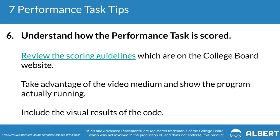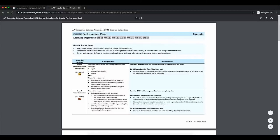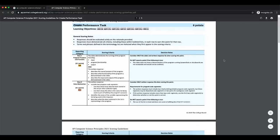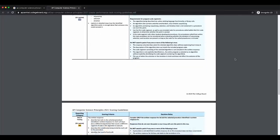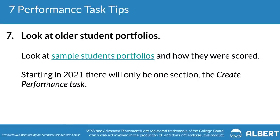Our sixth tip is to understand how your task is going to be scored. The best way to do this is to reference the previously released scoring guidelines by the College Board. For example, the first point is typically rewarded for program purpose and function. A common mistake students make is not taking advantage of the video format to show that their program works — screenshots are not enough. You have to show the visual results of your code.